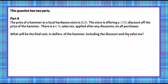Welcome back. When we look at this, we know that we're trying to find the final cost of the hammer to us. In the store the hammer is listed at $20 — that's the price on the hammer — and they have a sale. We're going to pay a 15% discount off the price of the hammer, so we're taking 15% off the $20. Then they're charging us a 6% sales tax after the discount.